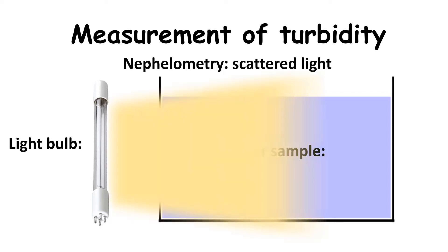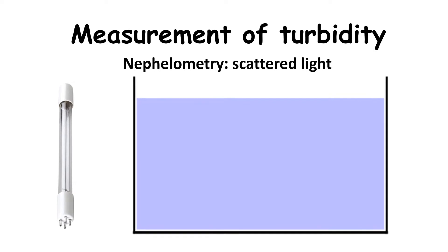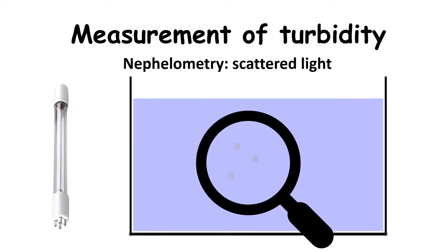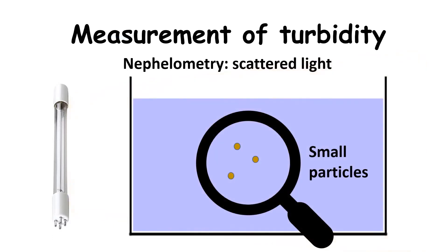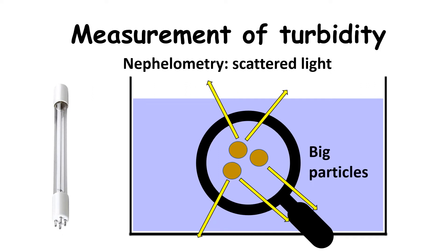When the light source hits the wastewater sample, suspended particles only reflect the incoming light. Depending on the shape, density, and size of the particles, the light will be scattered in different directions. Smaller particles tend to reflect light in a perpendicular direction, whereas bigger particles scatter light in more directions.